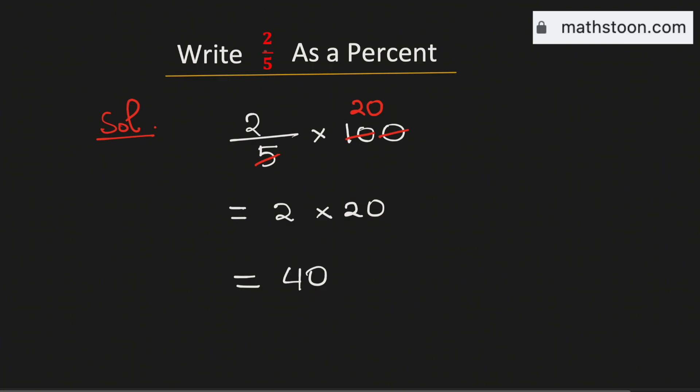Therefore 2 over 5 as a percent is equal to 40 percent and this is our final answer.